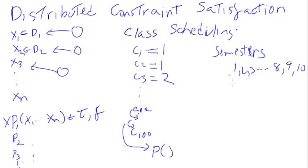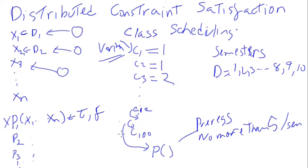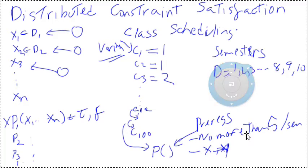The classes themselves are the variables, and the values assigned are the semesters. The constraints include things like prerequisites — class C12 might be a prerequisite for another class. You might also have a constraint like no more than five classes per semester, meaning no more than five variables can share the same value. Certain pairs of classes cannot be taken at the same time, or you might want certain pairs taken together.